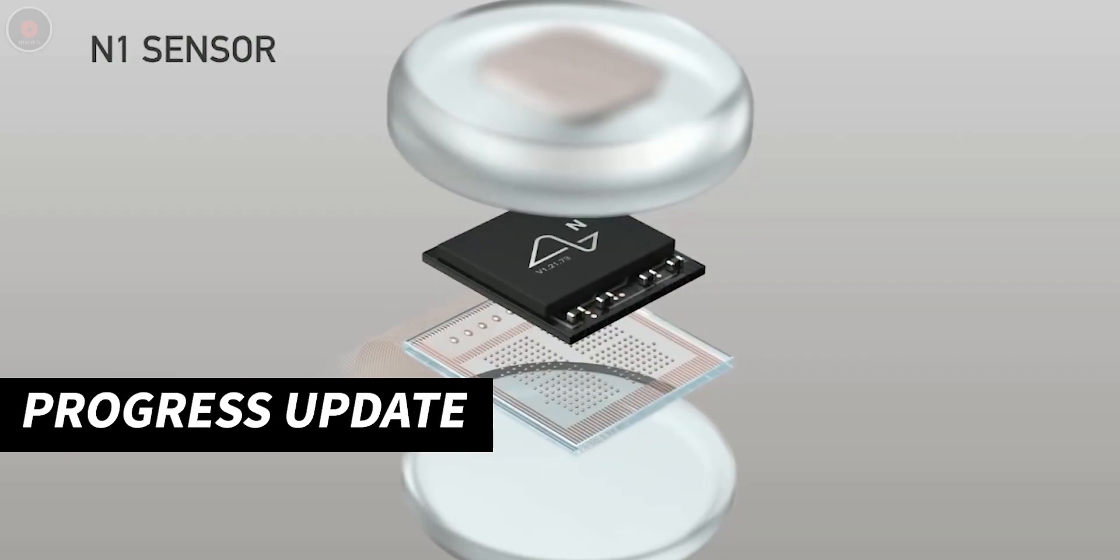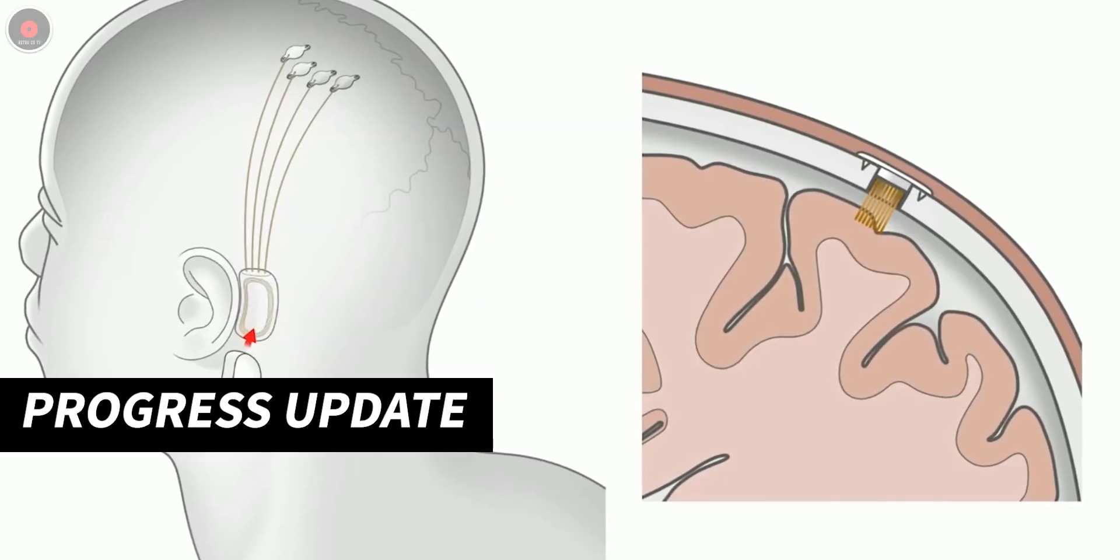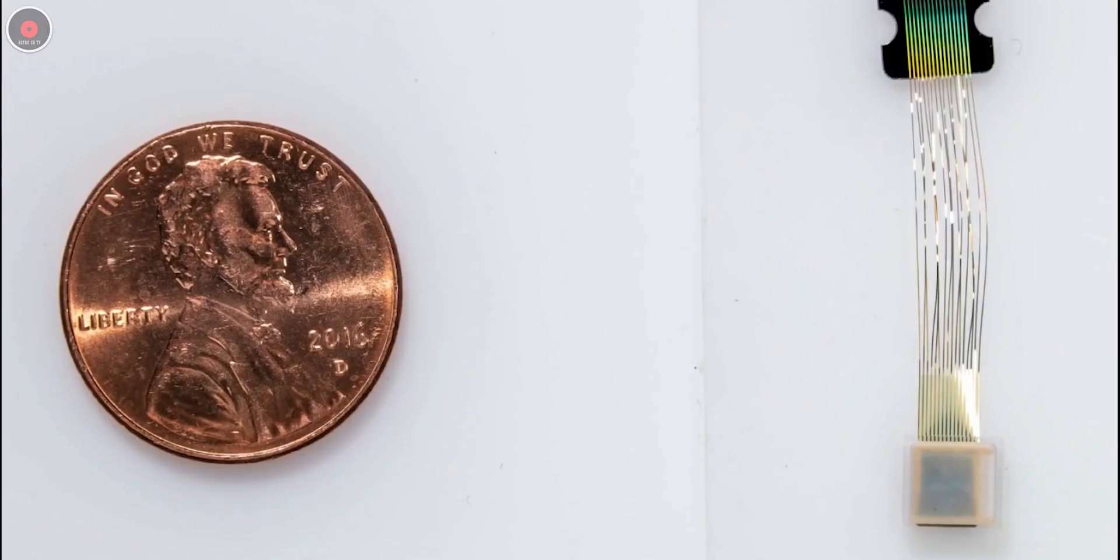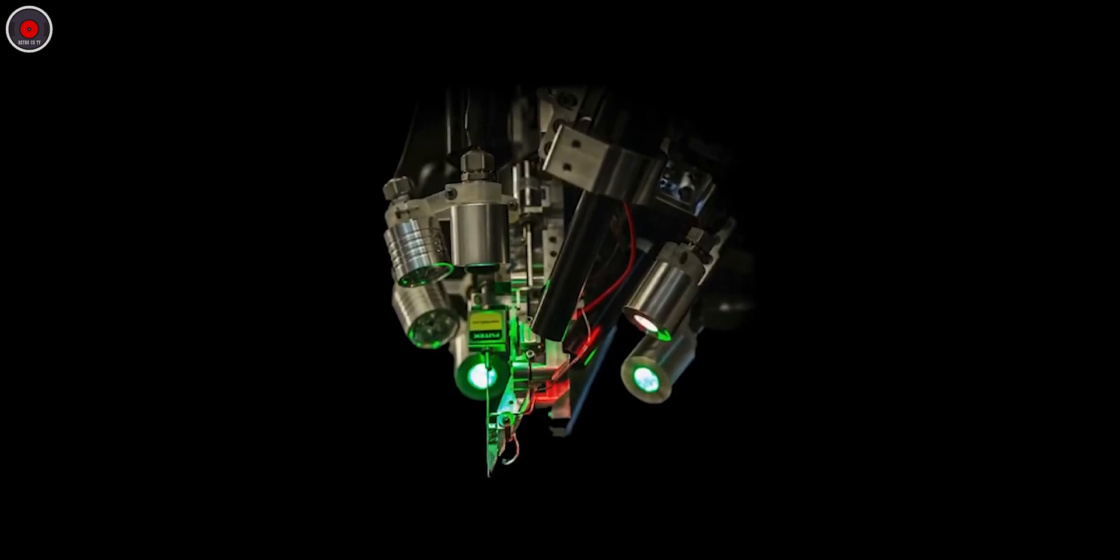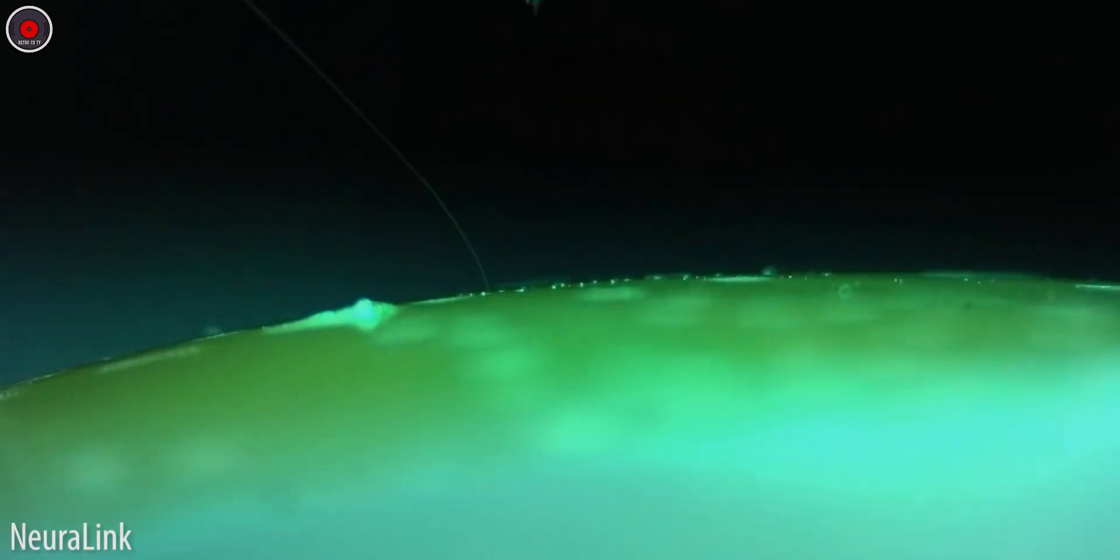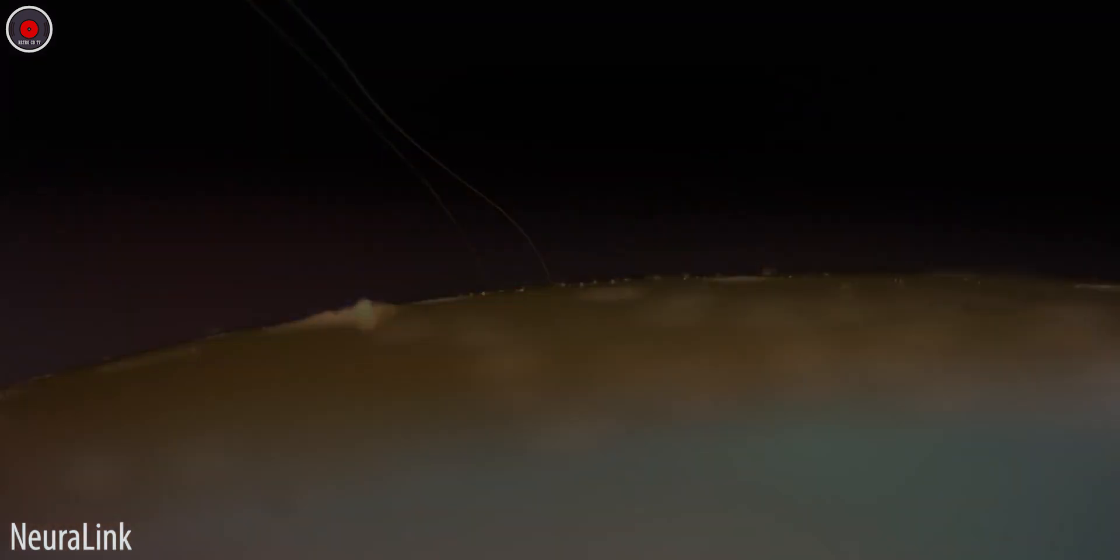17 July 2019, Musk and his team revealed that they had developed a BMI with ultrafine threads that can be woven into your brain to listen in on your neurons. The company has also built a robot that can perform the delicate surgery under supervision of a neurosurgeon. They also stated that they have already performed successful tests of this technology on mice and even on apes.